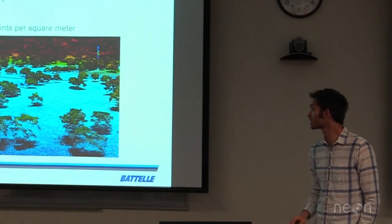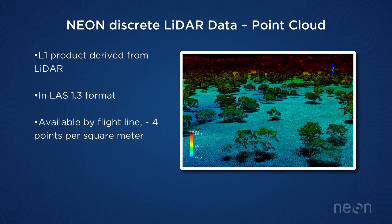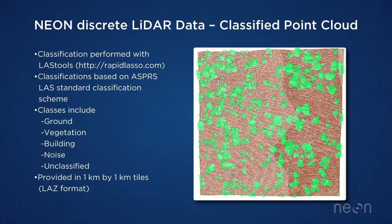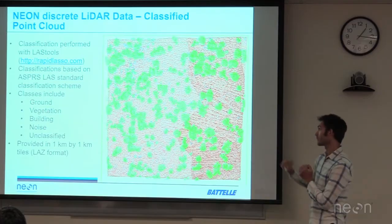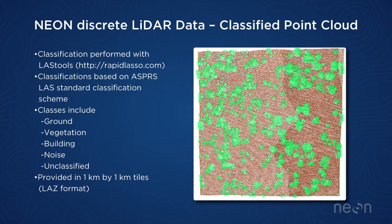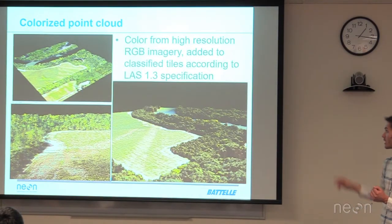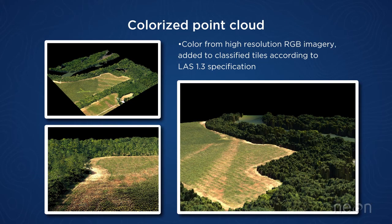The L1 product is in LAS 1.3 format and available by flight line. We also produce a classified point cloud in one-kilometer by one-kilometer tiles, using a commercial software package called LAStools, which looks at the geometry of the points and determines whether they are ground or vegetation based on their structure. We further classify points into building, noise, and unclassified. We also colorize the point cloud by applying RGB colors from high-resolution camera imagery to get a full-color 3D model of each site.